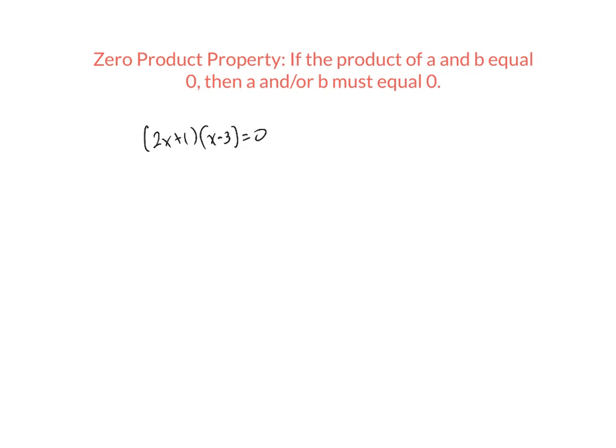If the thing that's on the left is factored and it equals zero, then we have a product of two things that equals zero, and so the zero product property would apply.